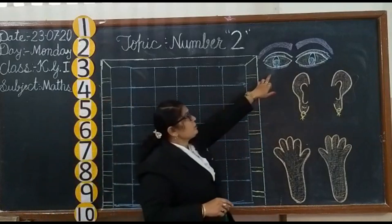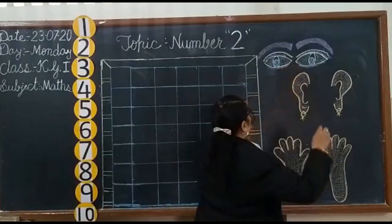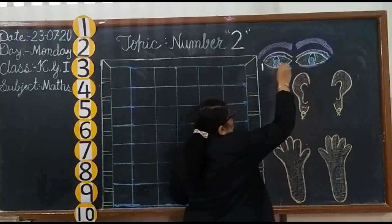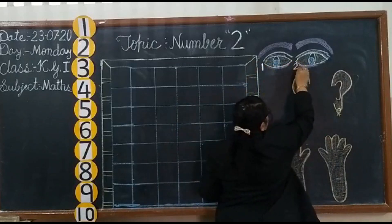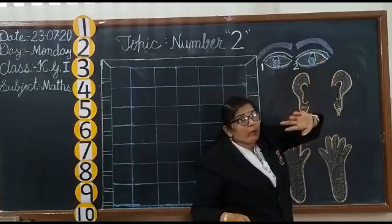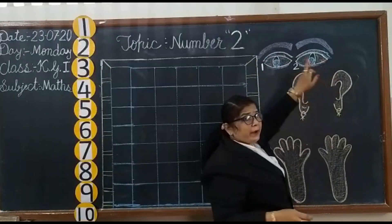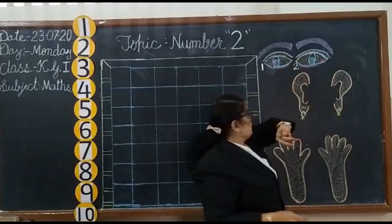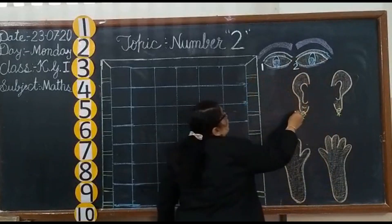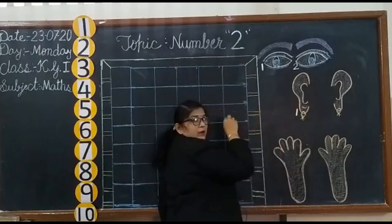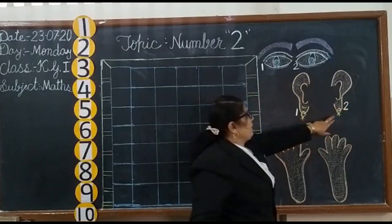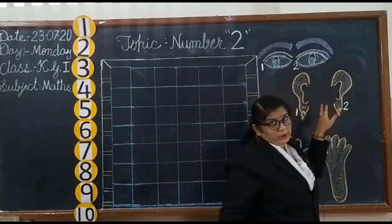First we will count the eyes. 1 eye, then this one is the 2nd eye. So here are 2 eyes. How many eye pictures are here? 2 eye pictures. Now we will count the ears picture. 1 ear and 2nd ear. So here are 2 ears pictures.